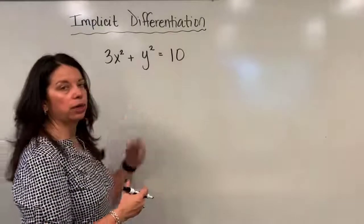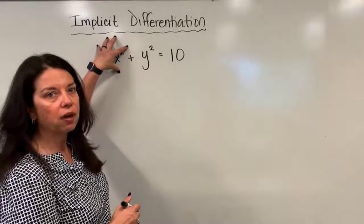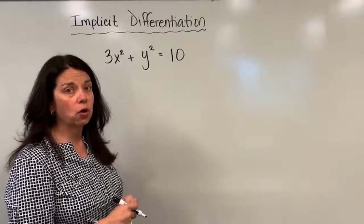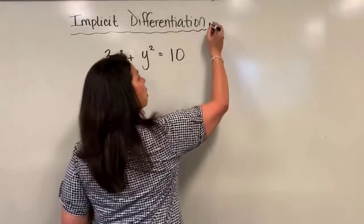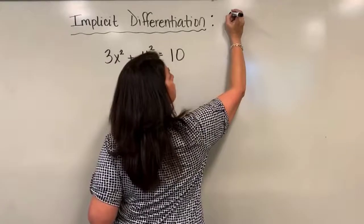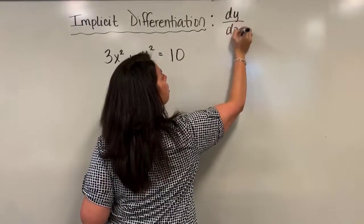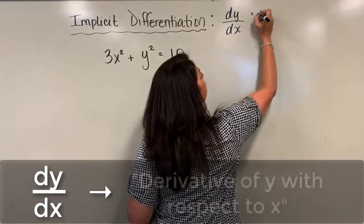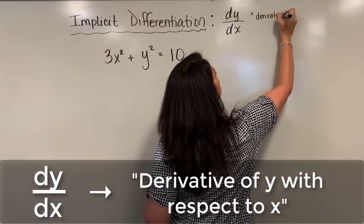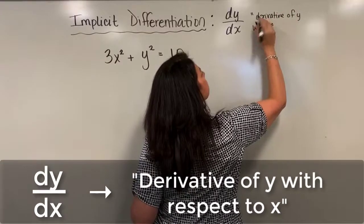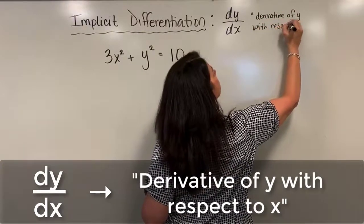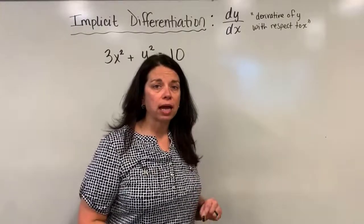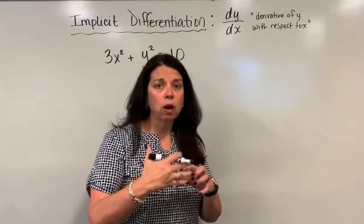I'm going to think about this equation in three parts. I've got this first term that I have to find the derivative of, the second term I'm going to find the derivative of separately, and then I'll find the derivative of the 10. When we're using implicit differentiation, we're often going to need to use this notation called dy over dx. And dy over dx tells us this is the derivative of y with respect to x. It's important for us to track what we're taking the derivative of and what we're taking it with respect to.